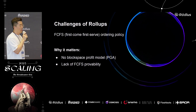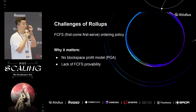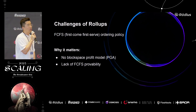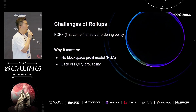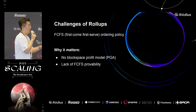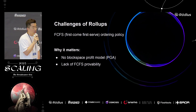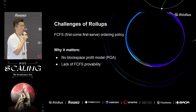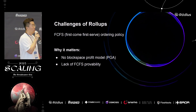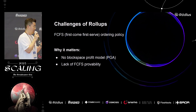Another challenge rollups face is FCFS — first-come-first-served policies for ordering transactions. The reason they apply this is to avoid criticism over centralization issues. But the problem is that rollups don't make money from FCFS — there's no priority gas fee for transaction ordering, which is one area where the protocol could make profit. And even when rollups claim to do FCFS, there's no way to verify or prove that they're actually doing it.